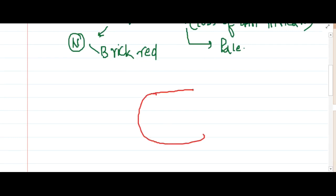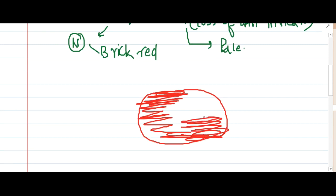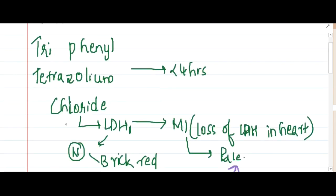If you see, this is the cross section of the heart. This is the normal heart muscle which I have drawn, which is actually staining with LDH, whereas here there is a pale region which is seen. This pale region is the one which is not stained. This is pale, whereas this is brick red, which is normal. So this is about triphenyl tetrazoleum chloride stain, TPTC stain.